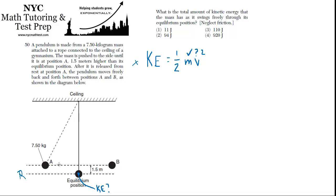What we do know is that however much potential energy the mass had at position A is how much kinetic energy it now has at the equilibrium position, because it's all been converted.